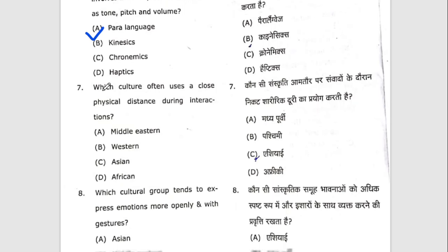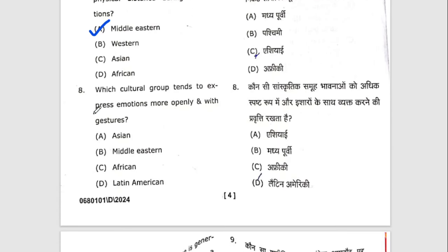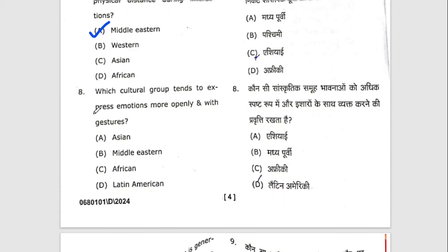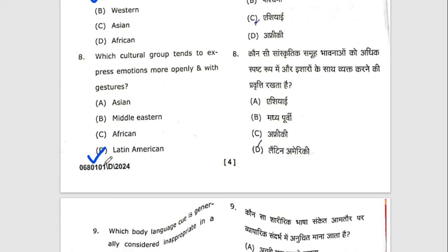Seventh question: which culture often uses close physical distance during interaction? The right option will be Middle Eastern. This is a little confusing because Asian cultures also can be an answer, but it seems to me it is Middle Eastern. Eighth question: which culture group tends to express emotions more openly and with gestures? The right option is D — Latin American, though this is a slightly ambiguous question.